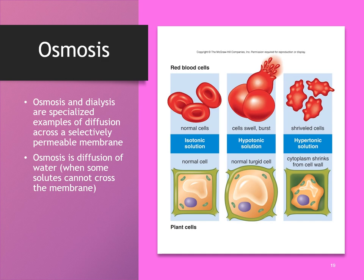A hypertonic solution is one where the concentration of salt in the water outside the cell is much higher than inside the cell. Remember, water follows salt — so water is going to move out of the cell, causing the cell to shrink or shrivel. This is called crenation.